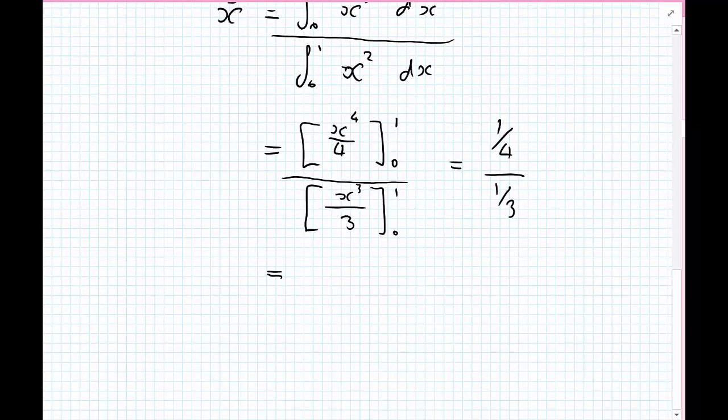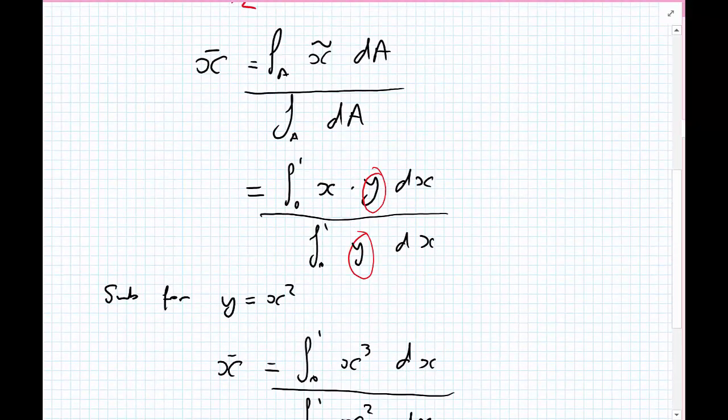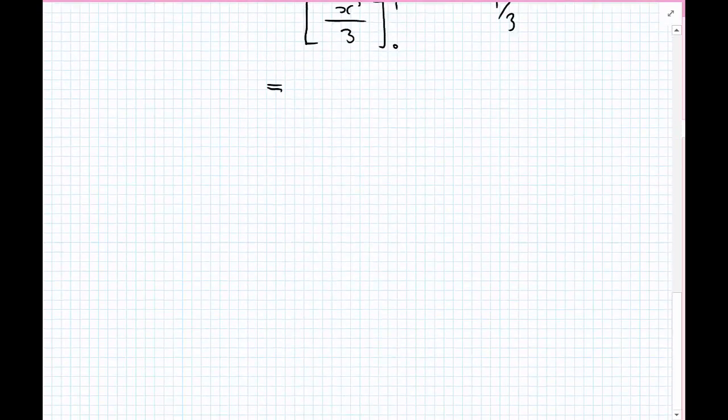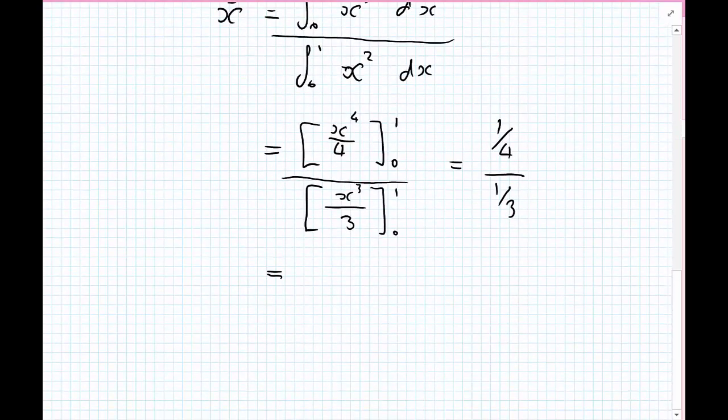If the units that we're using for this x and y is in meters, then we can do 1 quarter divided by 1 third, which will get us that the value for this centroid in the x direction equals 0.75 meters. So 3 quarters of the way along.